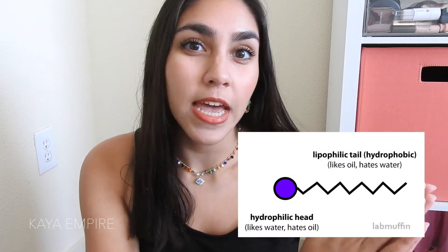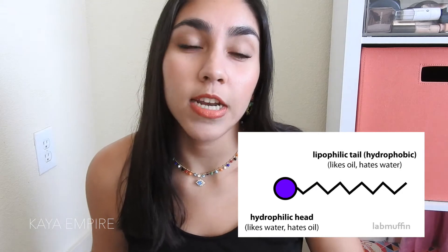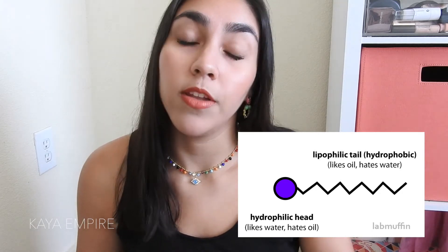A surfactant can look like many different molecules, but generally it's amphiphilic — meaning one end is hydrophobic and the other is hydrophilic. The hydrophobic end repels water and is more soluble in oil and fat, whereas the hydrophilic end is soluble in water. This is important because you need something that can break down oil and fat and suspend it in water so you can wash it away.